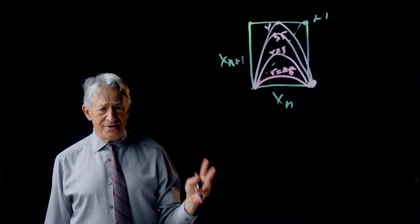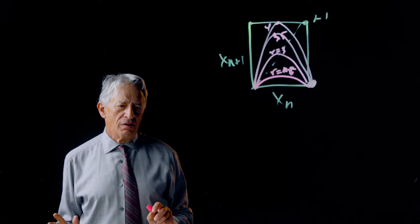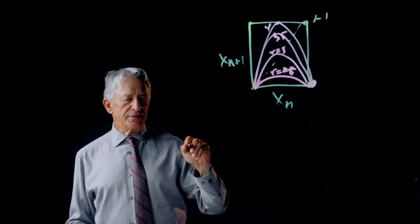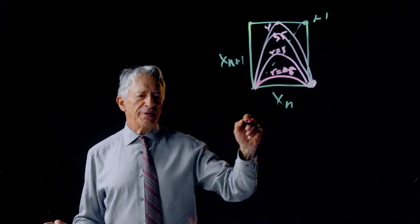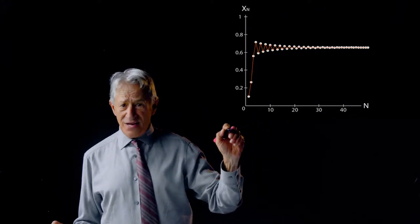What we see here, for very low values of r, we do indeed get equilibrium behavior, and the system goes to a stable equilibrium that is not 0.